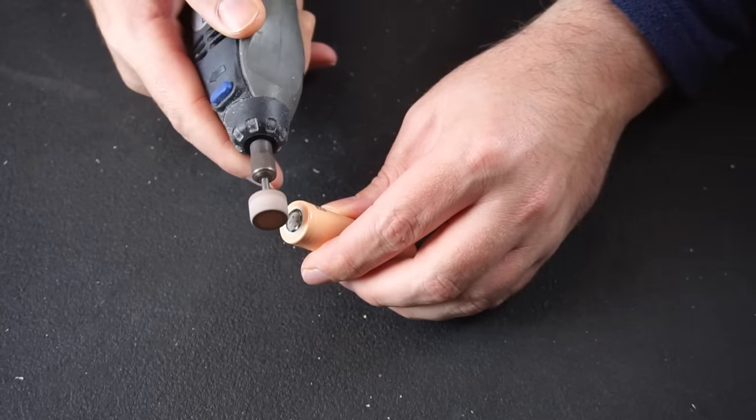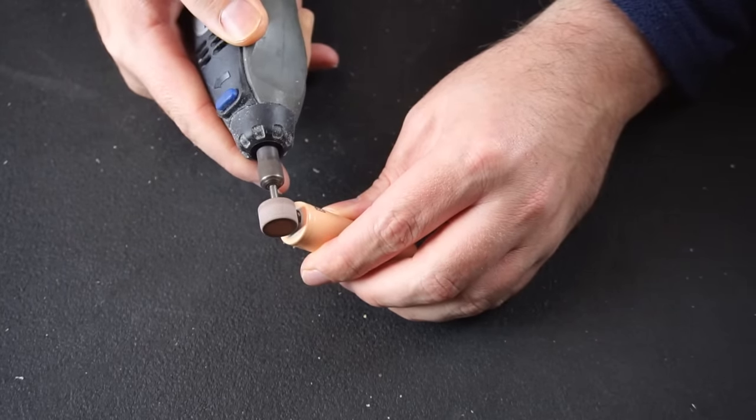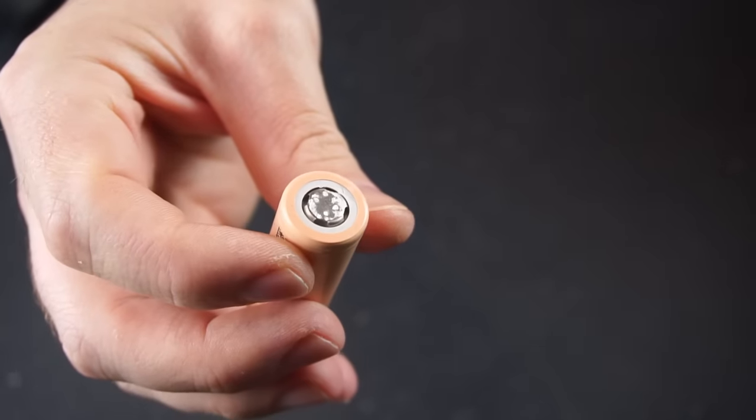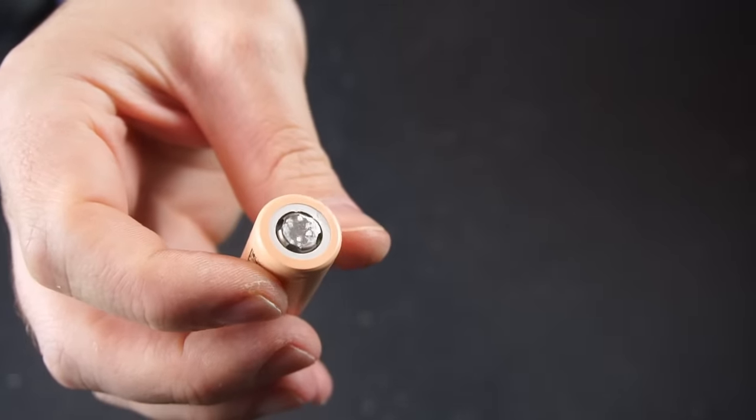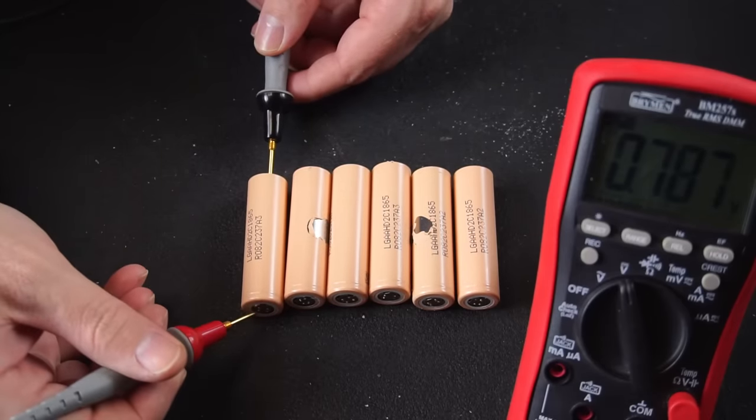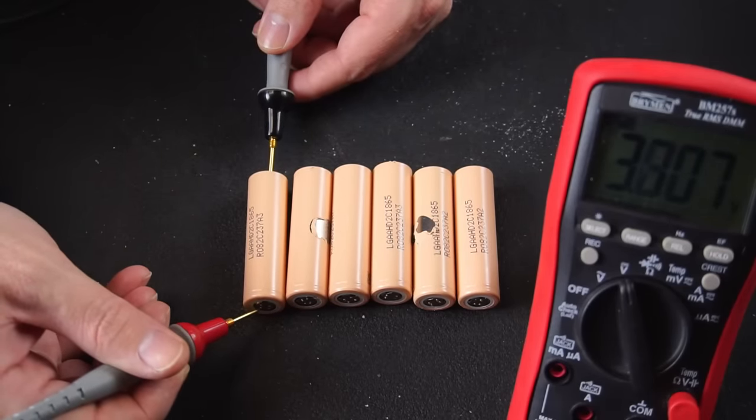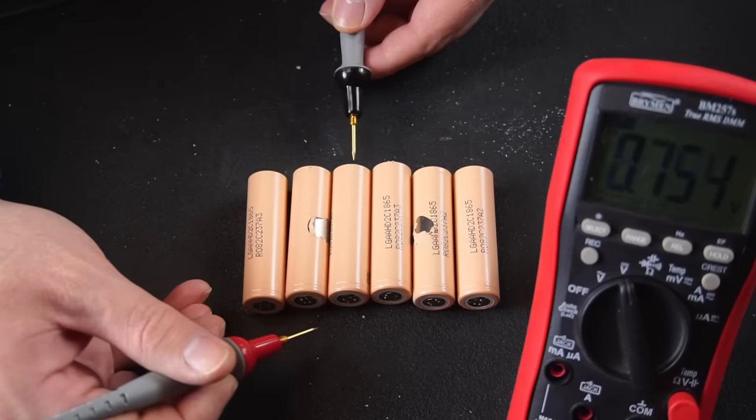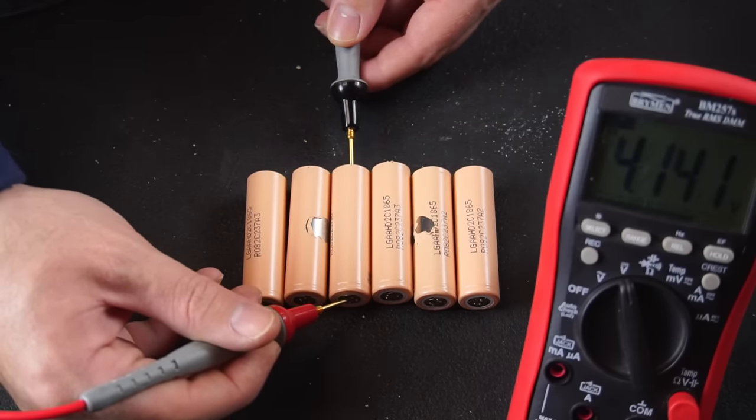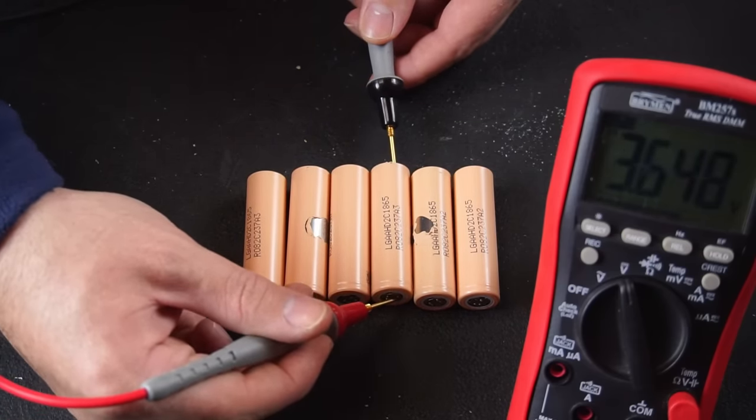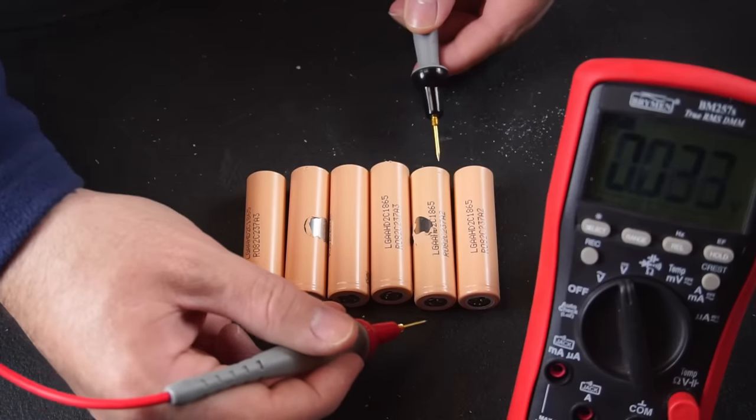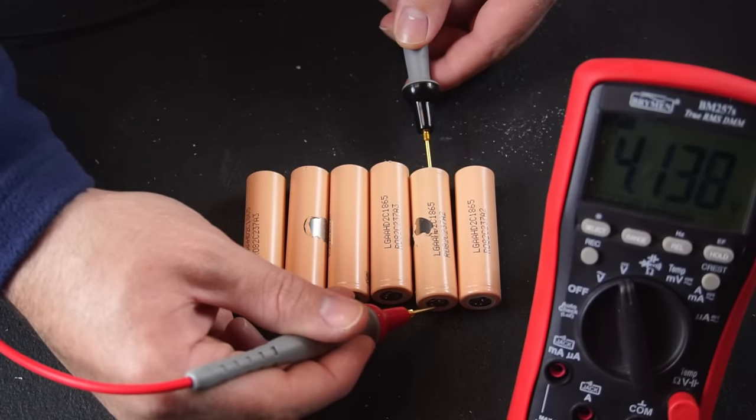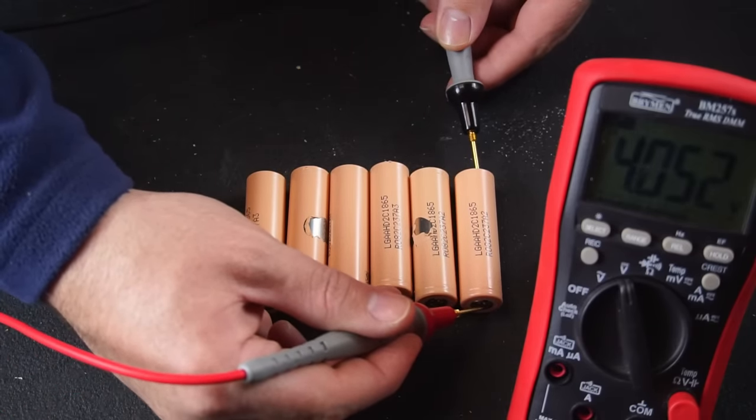After that, I used a dremel with a grinding stone to remove any remaining spot welds. I then checked the voltage of each cell just to make sure there aren't any bad cells. Ideally when you're using salvage cells, it's a good idea to thoroughly test the cells by putting them on a load tester. However in my case, I bought these cells from a trusted supplier, so I wasn't too concerned about thoroughly testing each cell.